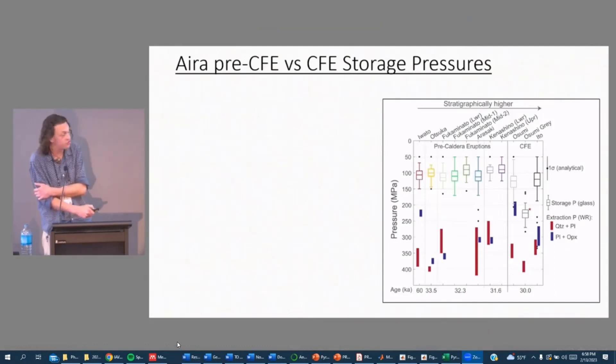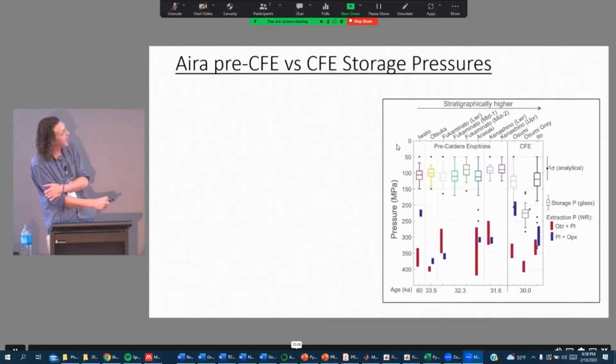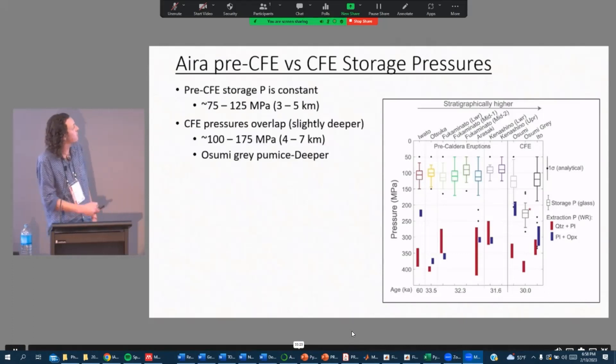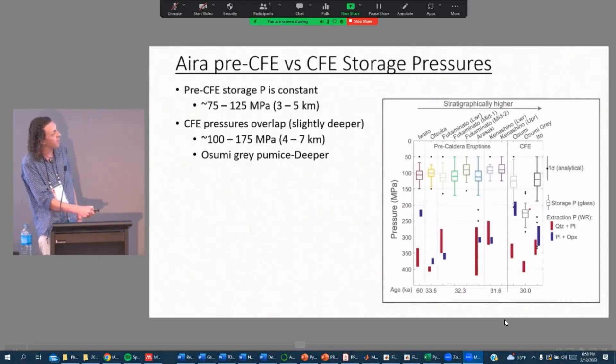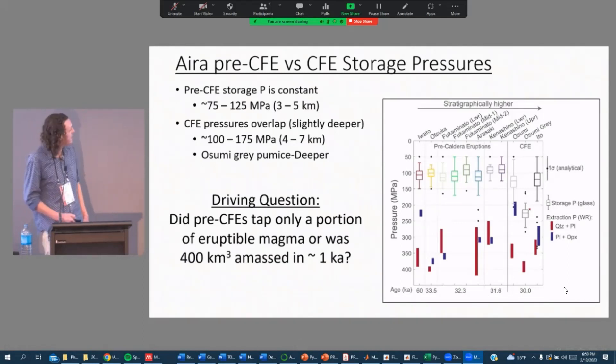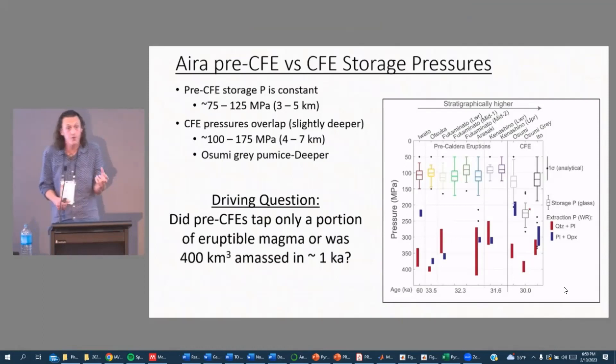Using the rhyolite melts geobarometer, this figure shows pressure and these different eruptions in order of stratigraphic height, going from older to younger. You can see that the pre-caldera eruptions are remarkably similar between 75 and 125 megapascals, and that the caldera forming eruption pressures overlap with those significantly but range to a slightly deeper level. The gray pumice, the little more mafic, are deeper. But there's definitely a lot of overlap between the pre-caldera and the caldera forming eruption in terms of the depth in the crust. So if all of these magmas were stored in the same spot inside of the crust, then the big million dollar question is: did the pre-caldera eruptions tap only a portion of the eruptable magma that was sitting there, or was 400 cubic kilometers of eruptable magma amassed in only 1000 years? It's got to be one of those two.